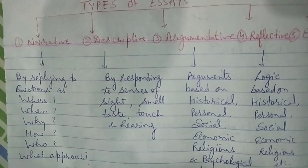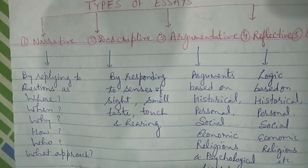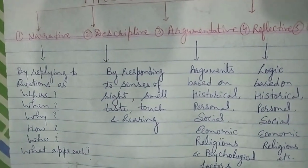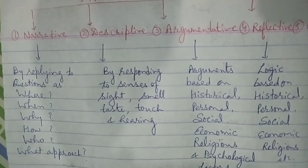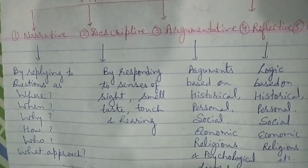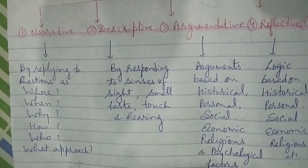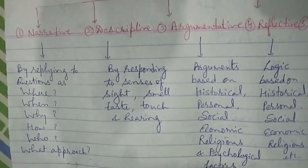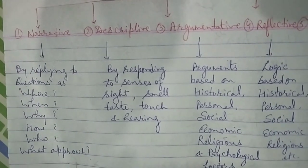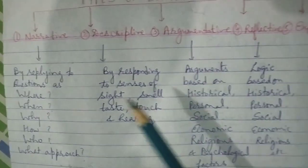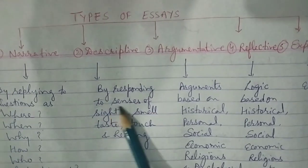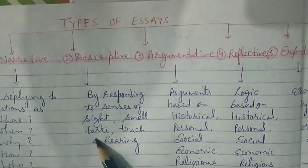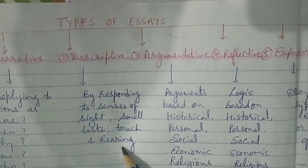Methodology for narrative essays: arrest the attention of the reader by beginning with a bang; create the right atmosphere or scene by dwelling on the place, time, and season; and introduce the character with a brief character sketch. Second is descriptive, which responds to senses of sight, smell, taste, touch, and hearing.